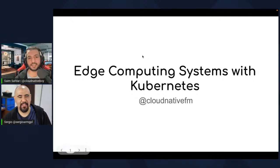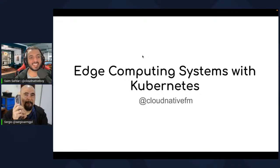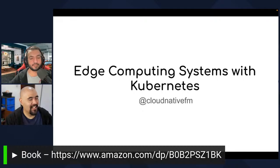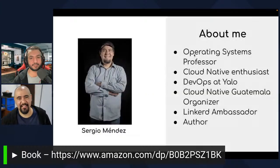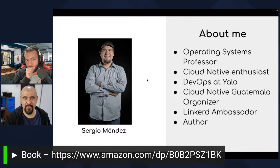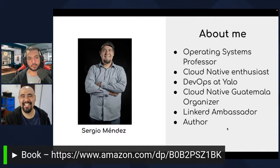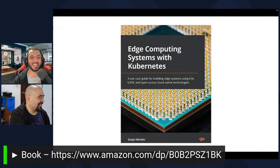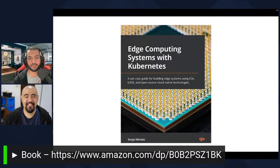This is a pretty small presentation. If you can see my camera, here is the book. It is a little bit big — about 485 pages, more or less, and 15 chapters. So I am a professor from Guatemala, and I also do DevOps at a company called Yalo that does conversational commerce using WhatsApp chatbots. This is my first book. I already received the physical book last week, and that is really, really nice.